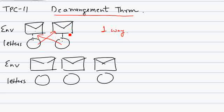The same thing can be done using the derangement theorem. The one wrong way — both wrong. We have found the answer: both letters go into the wrong envelope in one way.